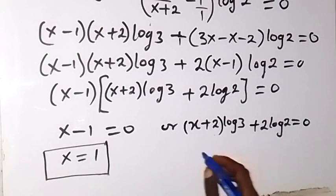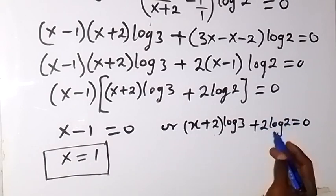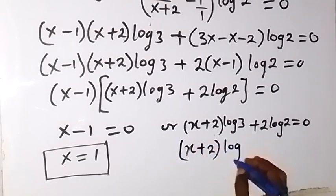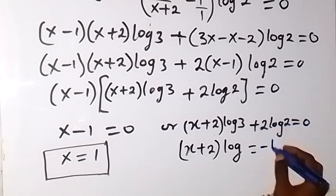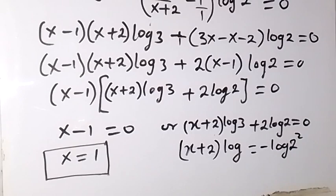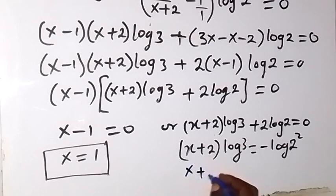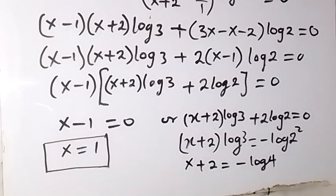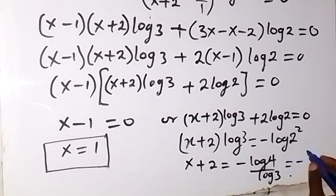On the other factor, we can equate (x plus 2) log 3 plus 2 log 2 equals 0. Bringing the log 2 term to the other side, we have (x plus 2) log 3 equals minus 2 log 2, which is minus log 2 raised to the power 2, that's minus log 4. Dividing both sides by log 3 gives x plus 2 equals minus log 4 over log 3. Using the change of base rule, this is minus log base 3 of 4.